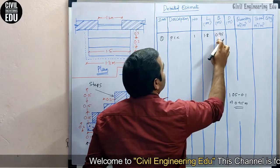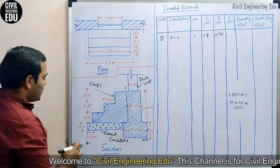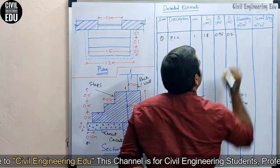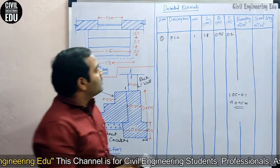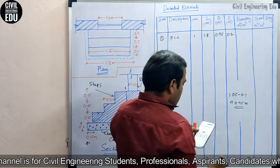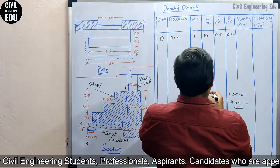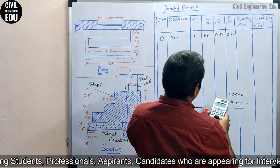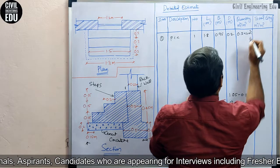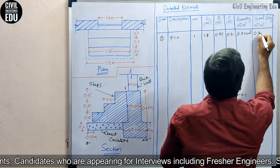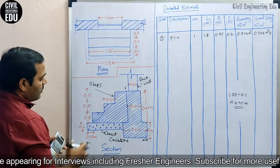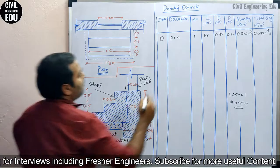The breadth is 0.95 meters, and the depth — which is the thickness — we take as 0.2 meters. So the quantity is 1.8 × 0.95 × 0.2 = 0.342 meter cube, multiplied by 1, giving 0.342 meter cube. This is the PCC quantity. Now let us calculate the quantity for brickwork in steps.